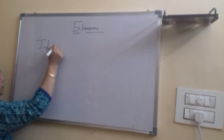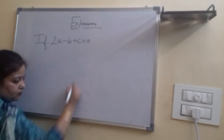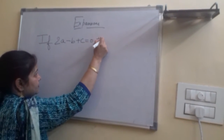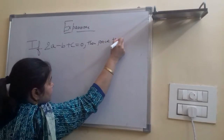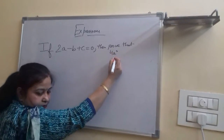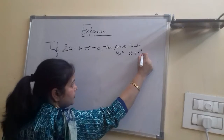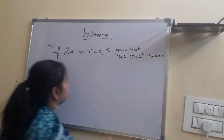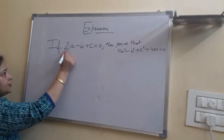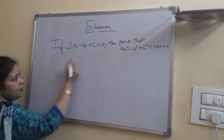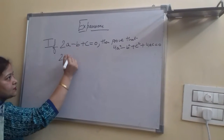Next question: if 2a minus b plus c equals 0, then prove that 4a square minus b square plus c square plus 4ac equals 0. Let us concentrate on what is given — it is 2a minus b plus c equal to 0. The first step is to take b to the other side.